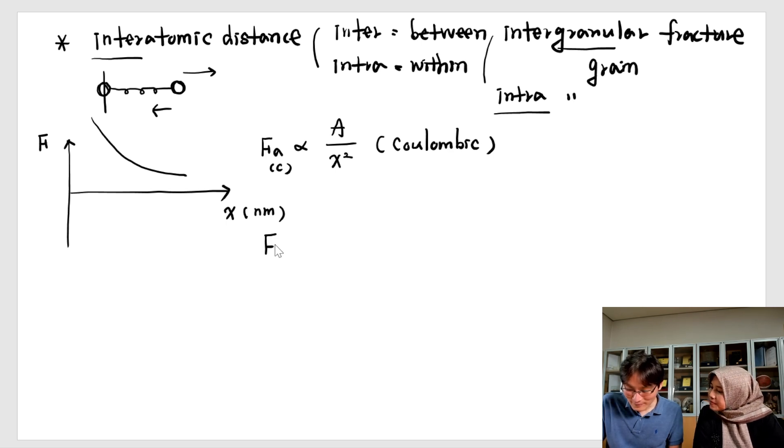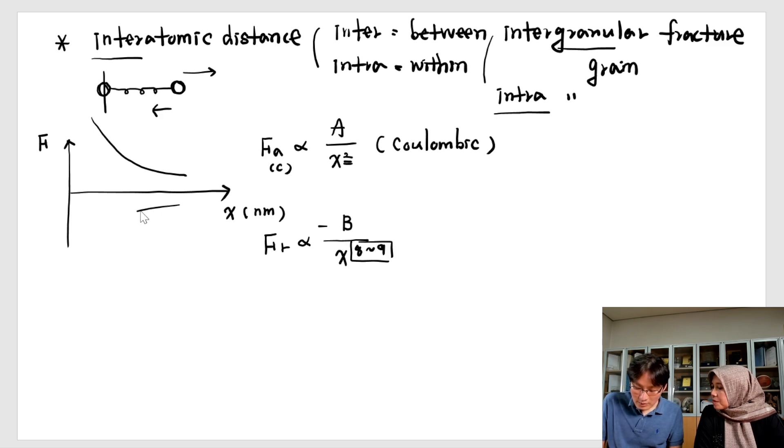Higher than this coulombic force. And then B. And then direction will be different. And we just give a minus value. Because of these high numbers, this slope is very steep, significantly increase.